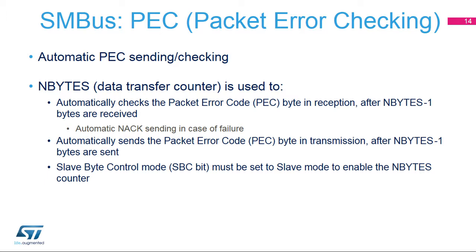The Data Transfer Counter initialized with the Nbytes value is used to automatically check the PEC byte in reception after Nbytes minus 1 bytes are received. If the received PEC byte does not match the calculation, a NOT Acknowledge is automatically sent after the PEC byte. In transmission, the internally calculated PEC byte is automatically sent after Nbytes minus 1 bytes. Slave Byte Control Mode must be enabled in slave mode in order to enable the Nbytes counter and allow automatic PEC reception or transmission.